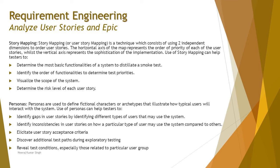Coming up next is story mapping, which is slightly different from storyboarding. Story mapping is about mapping different stories together, determining priorities and the order of execution, and determining what functionalities will be dealt with at what point in time. It helps you determine complexity, any risk involved, and prioritize user stories accordingly for different releases.